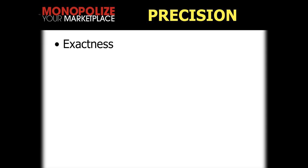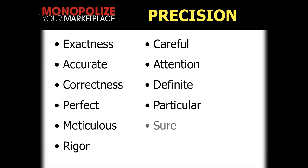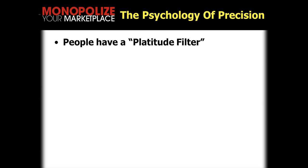Let's talk about precision now — the next concept. Just like I gave you words for power, I'm going to give you words for precision: exactness, accurate, correctness, perfect, meticulous, rigor, careful, attention, definite, particular, sure, and strict. These become your evaluation. When you write something, ask yourself: is it accurate? Is it exact? Is it correct? Is it meticulous? Is it rigorous? This is the opposite of the platitude. As we look at the psychology of precision, we're going to talk about platitudes. People have a platitude filter they utilize subconsciously without even thinking about it.